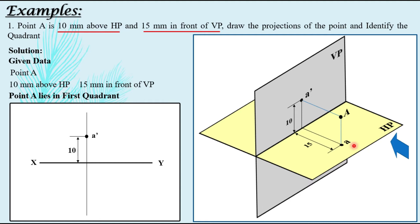Now rotate the horizontal plane clockwise 90 degrees. The top view of A will go below the XY line at a distance of 15 mm, so take 15 mm below and label it A. A dash and A lie on a single vertical projector — this is important because these are not different points, they are just two views of the given point.